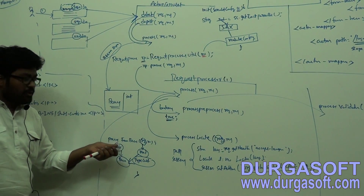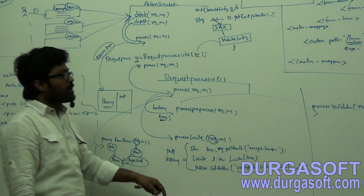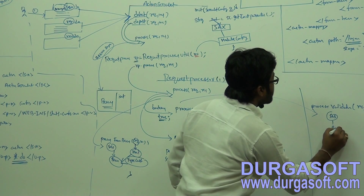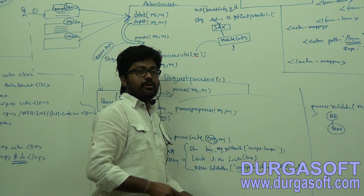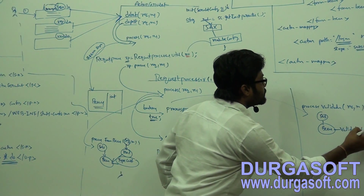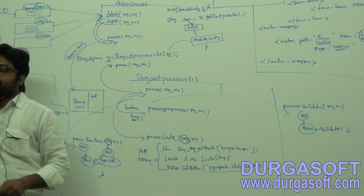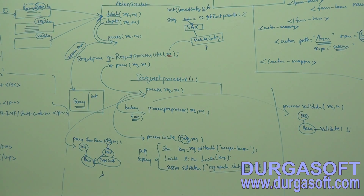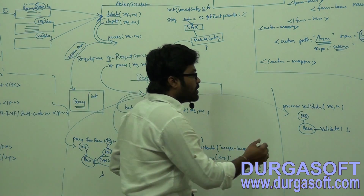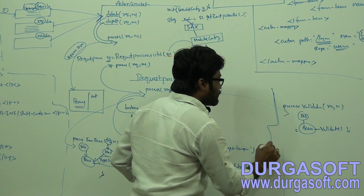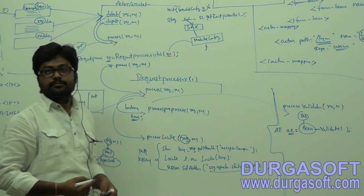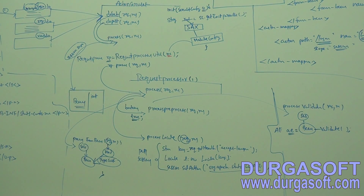After storing data into this bean, it will keep it into session scope. From that session scope, it will get your bean again. In that bean, already we have data. It will get your bean and call the validate method on it. The validate method will return one value - an ActionErrors object it will return.